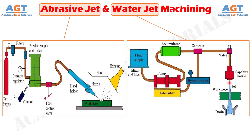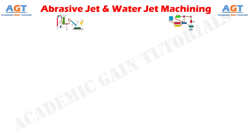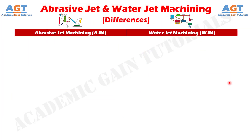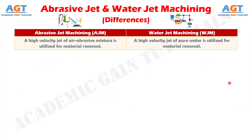Let's look into the basic differences between abrasive jet and water jet machining in a tabular form. Difference number 1: in abrasive jet machining, a high velocity jet of air-abrasive mixture is utilized for material removal, whereas in water jet machining, a high velocity jet of pure water is utilized for material removal.